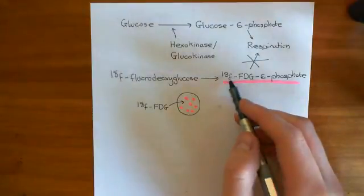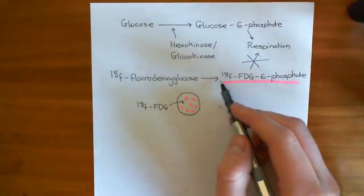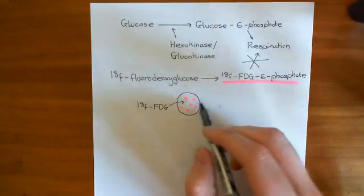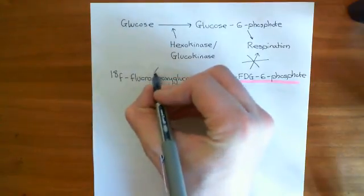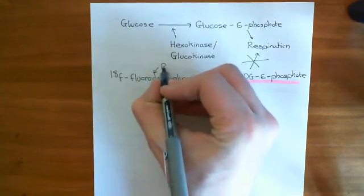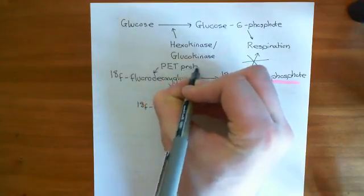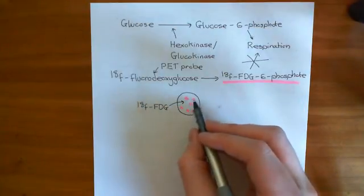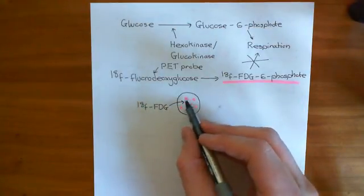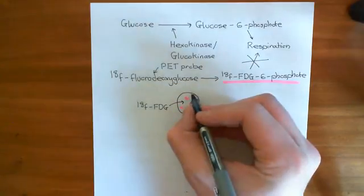Now what happens is that gradually the fluorine atoms, the radioactive fluorine atoms, are tagged to this PET probe. This 18F-fluorodeoxyglucose is our positron emission tomography probe, our radioactively labeled probe. Basically now what's going to happen is that these fluorine atoms are going to radioactively decay and they're going to start releasing their positrons.